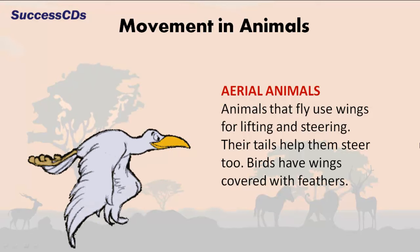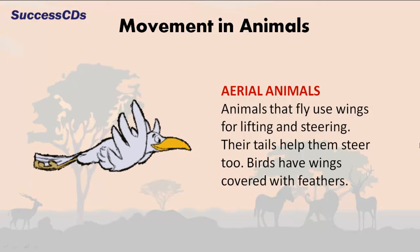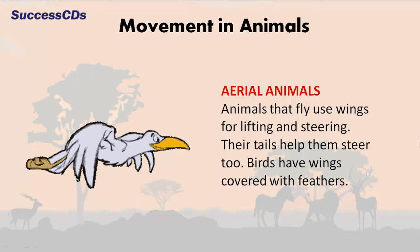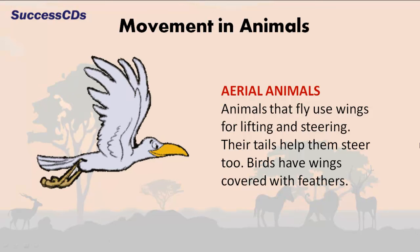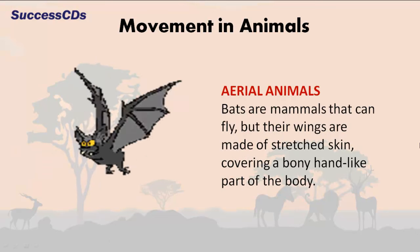Aerial animals are animals that fly by using their wings for lifting and steering. Their tails help them steer too. Birds have wings covered with feathers. Bats are mammals that can fly, but their wings are made of stretched skin covering a bony, hand-like part of the body.